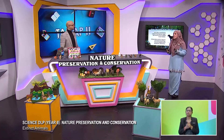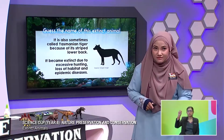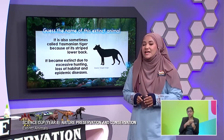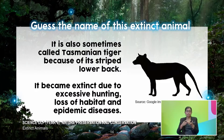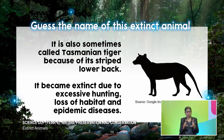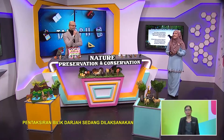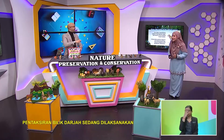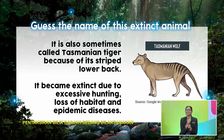Sometimes this is also called a Tasmanian tiger. It became extinct due to excessive hunting, loss of habitat, and epidemic diseases. Can you guess what the answer is? Another name for Tasmanian tiger — they're also known as the Tasmanian wolf. Yes, it is! Just like a wolf. Good job, Abang Sean.